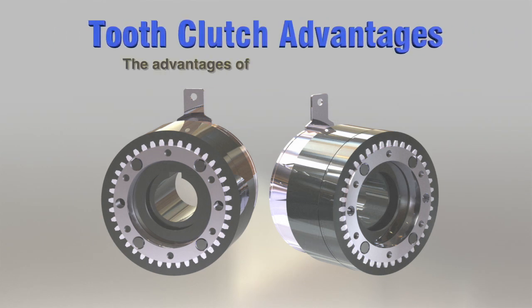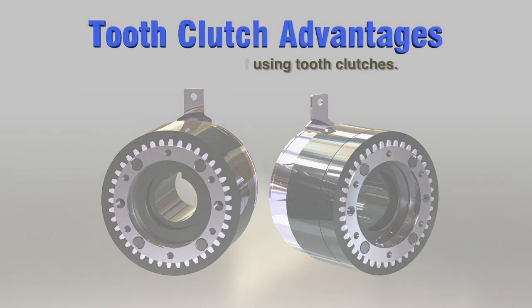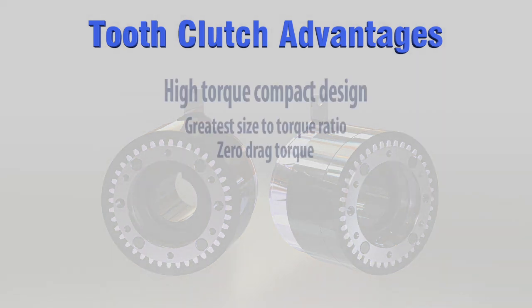Tooth clutch advantages. Electromagnetic tooth clutches have the highest torque per size of any electromagnetic style clutch. Unlike multiple disc clutches, when tooth clutches are disengaged, there is no residual drag torque.